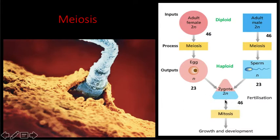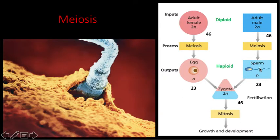After fertilization, that's where mitosis takes over. So meiosis is responsible for producing eggs and sperm, and mitosis is responsible for our growth and development. For males, they continue producing sperm throughout their entire life. However, as males age, the quantity and quality of the sperm decreases.